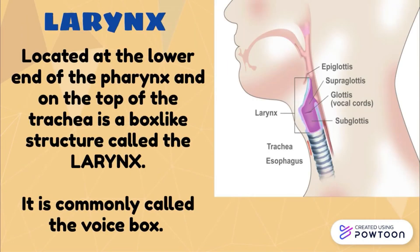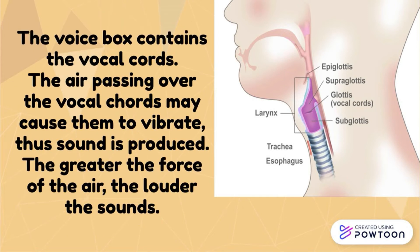The lower respiratory tract. Larynx. Located at the lower end of the pharynx and on the top of the trachea is a box-like structure called the larynx. It is commonly called the voice box. The voice box contains the vocal cords. The air passing over the vocal cords may cause them to vibrate. Thus, sound is produced. The greater the force of the air, the louder the sounds.